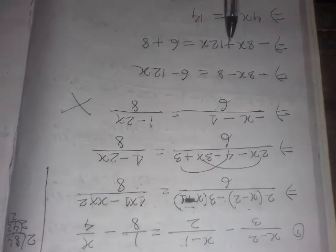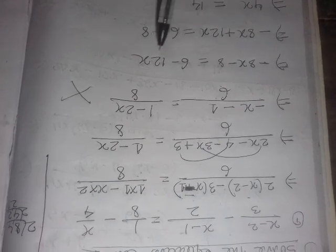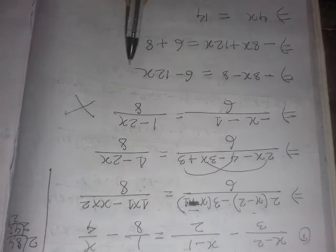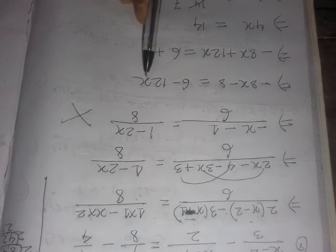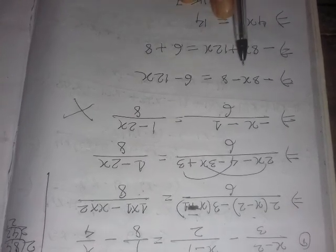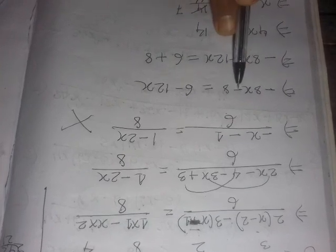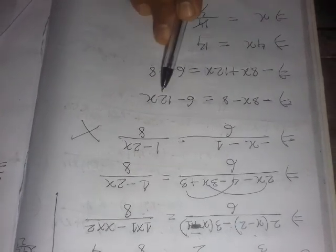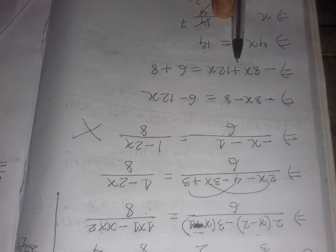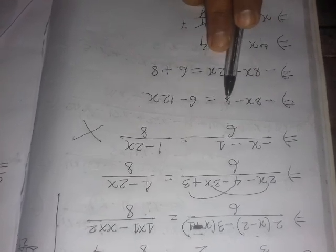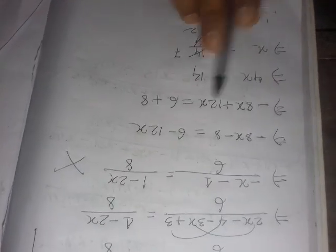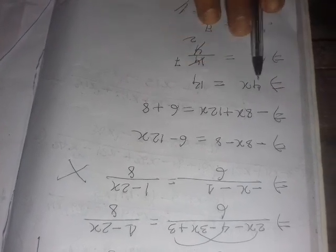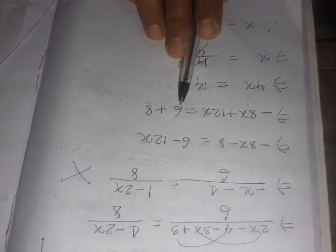Now we take terms to the left side. Minus 8x is there, and on the right side minus 12x. When we move minus 2x to the right side, minus becomes plus. The 12x becomes plus, and the 8 before the minus becomes plus. So 8x plus 12x gives 4x, and 8 plus 6 gives 14.